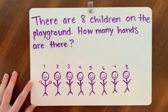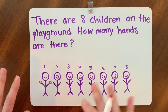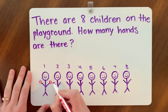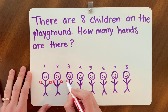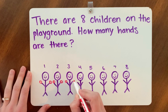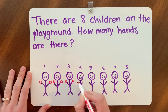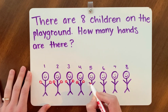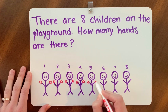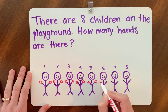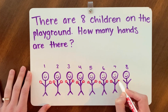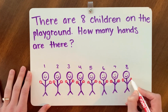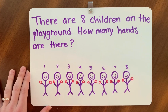How many hands do we each have? Two hands. One, two. One, two. One, two. One, two. One, two. One, two. And one, two.